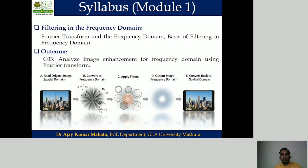The third topic of module one will be filtering in the frequency domain. In this topic, we first learn about the Fourier transformation, both in the continuous domain and in the discrete domain. Thereafter, we will learn how to convert an image into the frequency domain, how to design a filter in the frequency domain, how to generate the frequency domain output, and how to convert this frequency domain output back into the spatial domain.